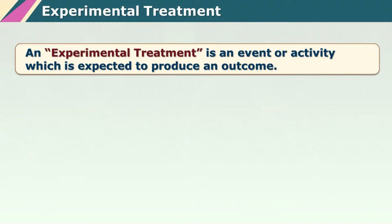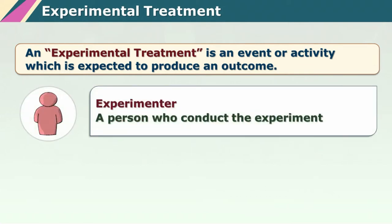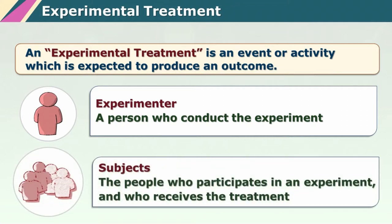The experimenter is the scientist — you or I — who is actually conducting the experiment and is in full control of the experimental procedure and its various steps. The subjects are the people participating in the experiment, receiving the various levels of the treatments given to them. We have to select these subjects very carefully, which is part of our sampling procedure for any experimental design.